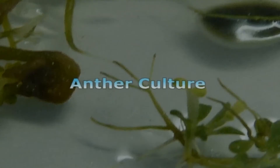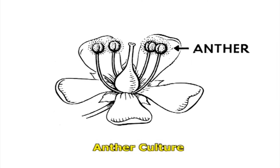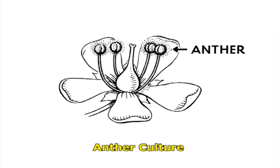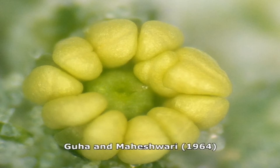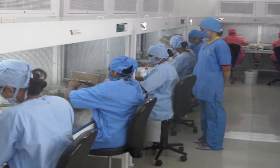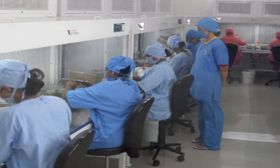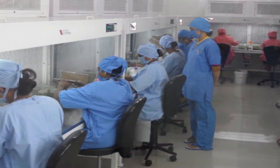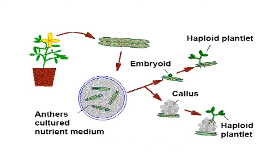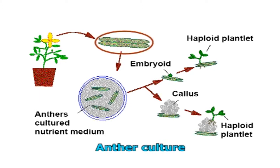Let us discuss in detail the various plant tissue culture techniques. Anther culture is the method of using anthers to cultivate haploid plantlets. The method was introduced in 1964 by two Indian scientists Guha and Maheshwari. This method can be used in over 200 species comprising tomato, rice, tobacco, barley, geranium and tree species. Anther culture is a technique by which the developing anthers at a specific and critical stage are cut out aseptically from a sealed flower bud.